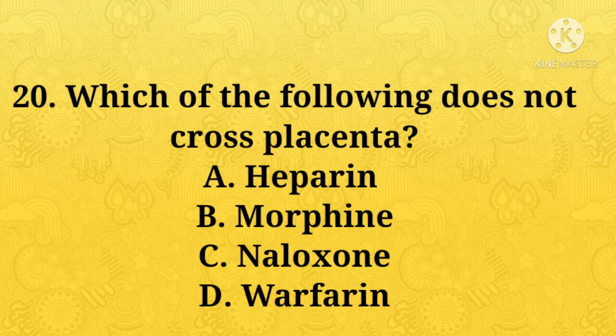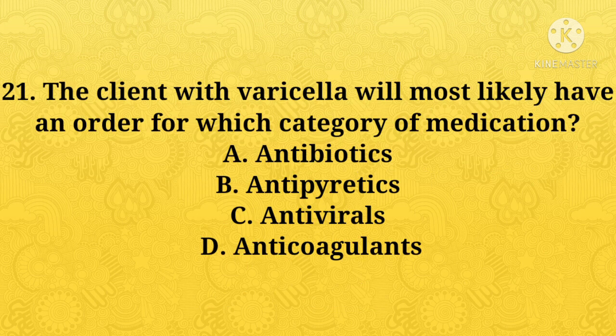Which of the following does not cross the placenta? A: heparin, B: morphine, C: naloxone, D: morphine. Option A, heparin, is the right answer. The client with varicella will most likely have an order for which category of medicine? A: antibiotic, B: antipyretics, C: antiviral, D: anticoagulants. Option C, antiviral, is the right answer.